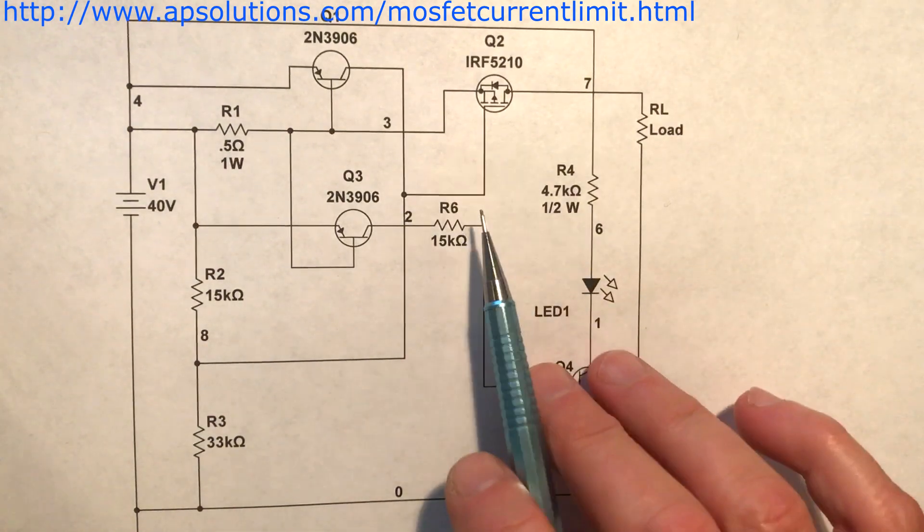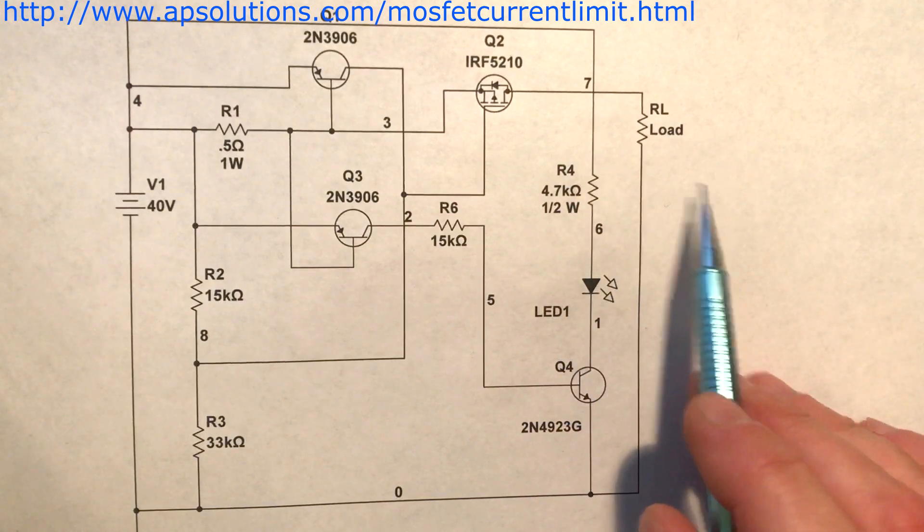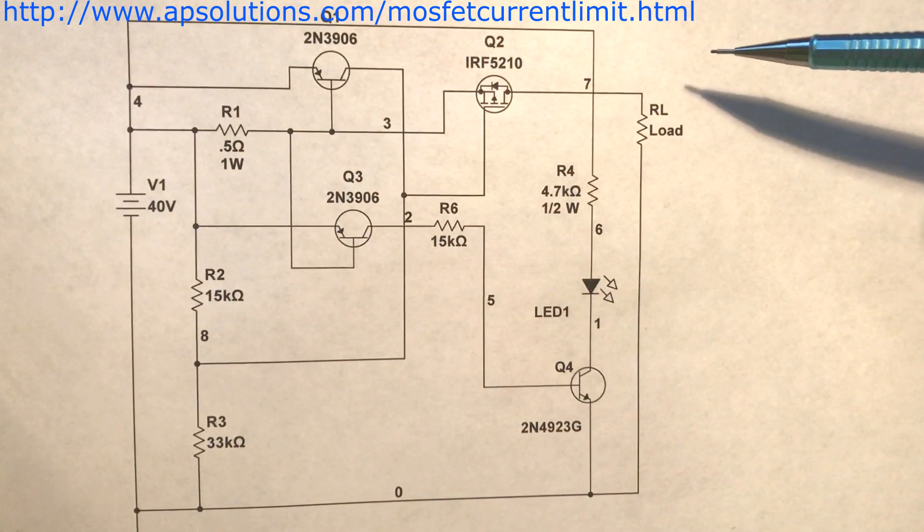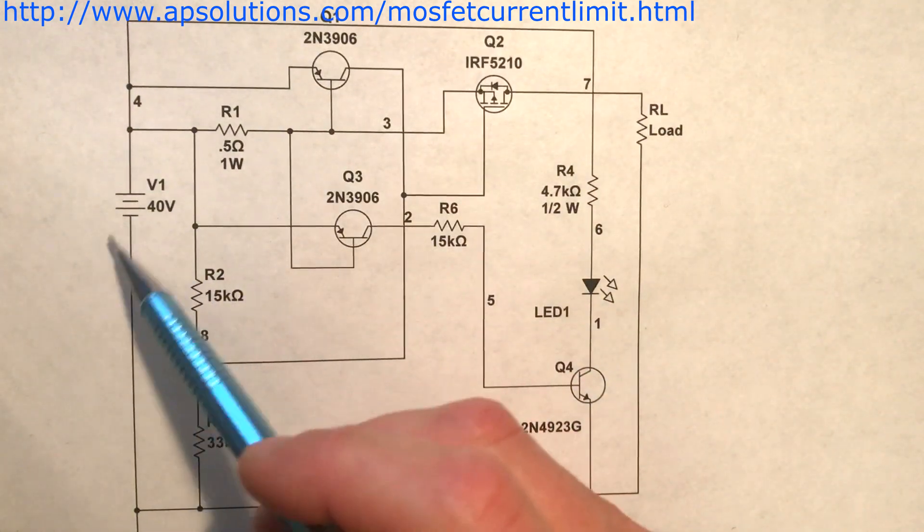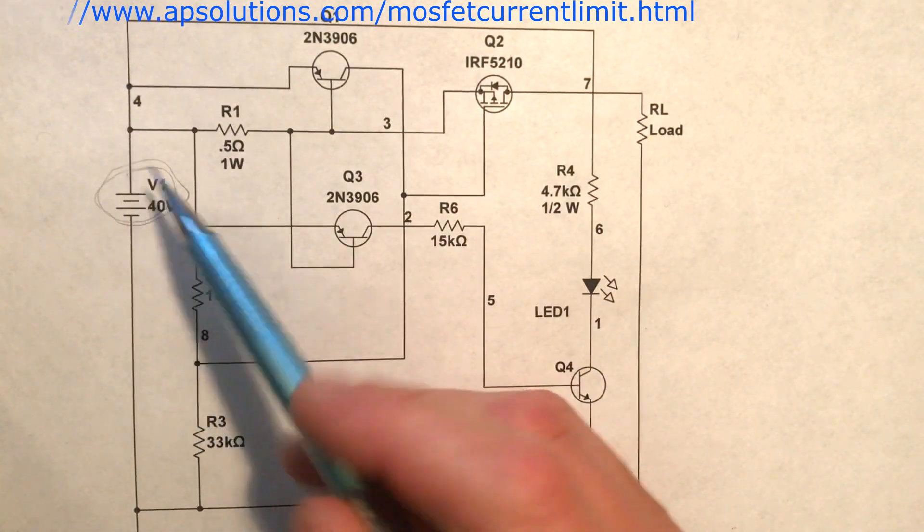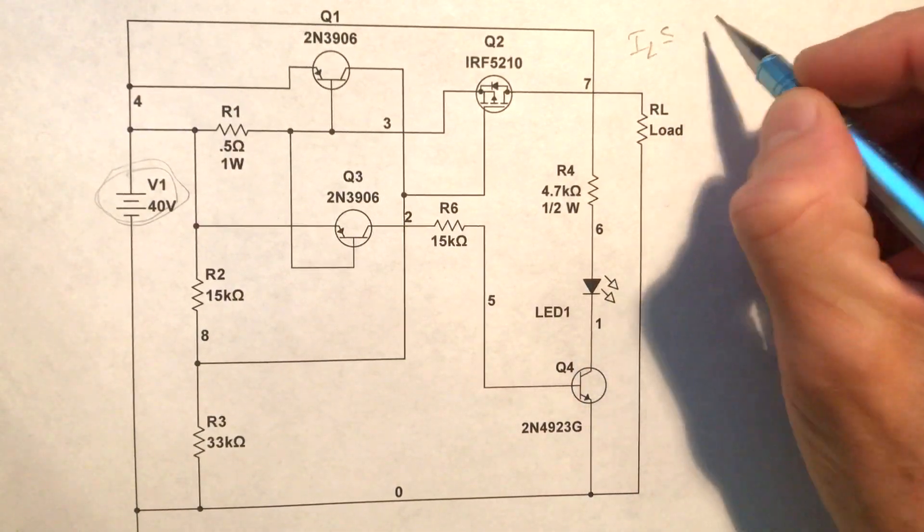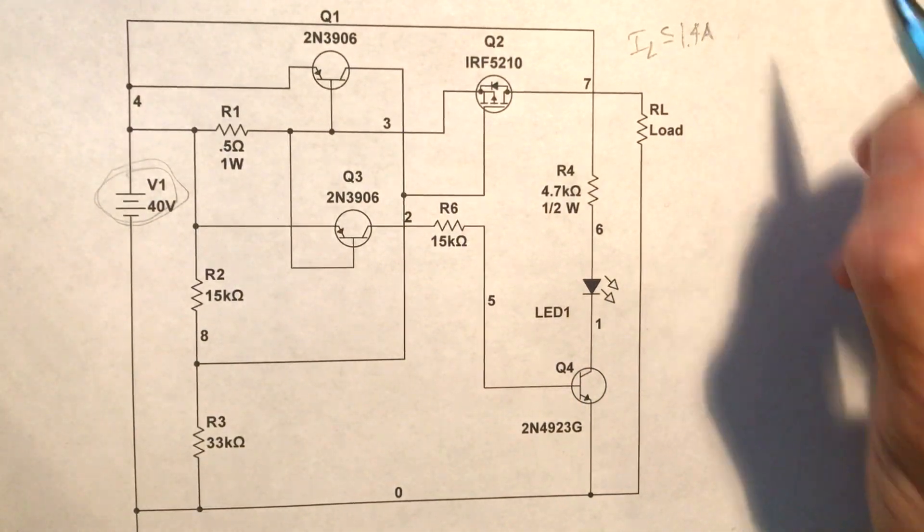All right, this is a MOSFET current limiting circuit I came up with that I'd like to describe. Let you check it out. Now basically I'm working with a 40 volt supply and I want my current limit to be less than or equal to or a max of 1.4 amps.